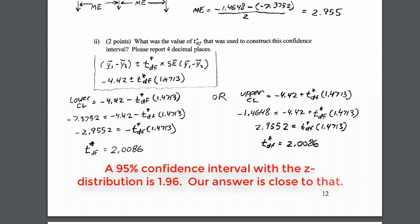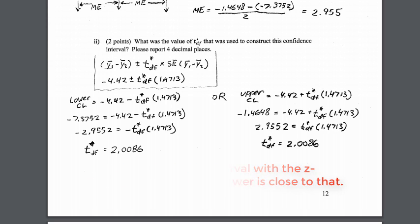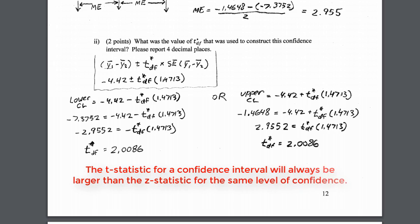So knowing that you get 2.0086 tells you this seems about right. If you had gotten something below 1.96, your answer would be wrong because the t is always greater than the z. This is just a little check on your work.